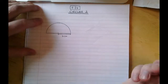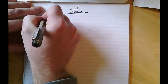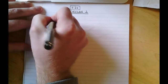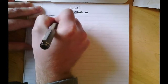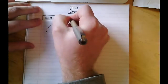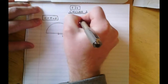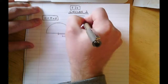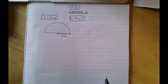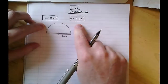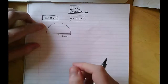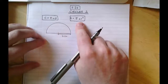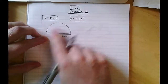We should already know from Circles 1 that the circumference of a circle is pi times by its diameter, and the area is pi times by its radius squared. We can use these to find the perimeter and the area of the semicircle.